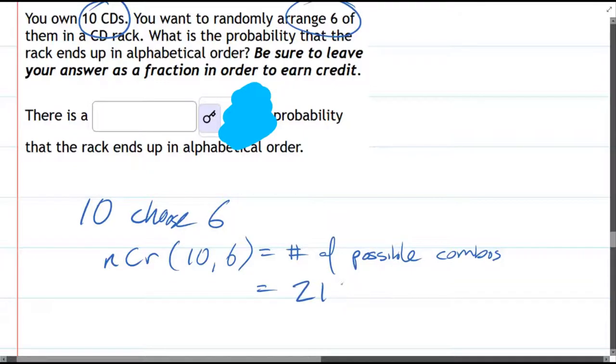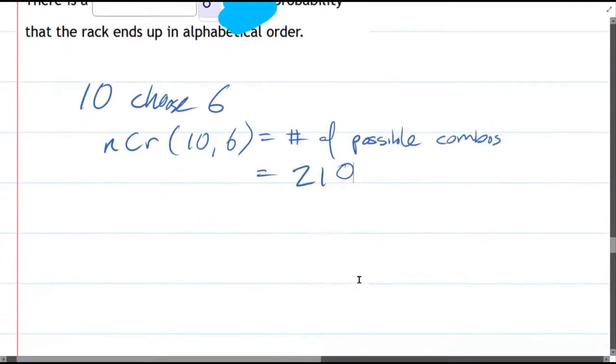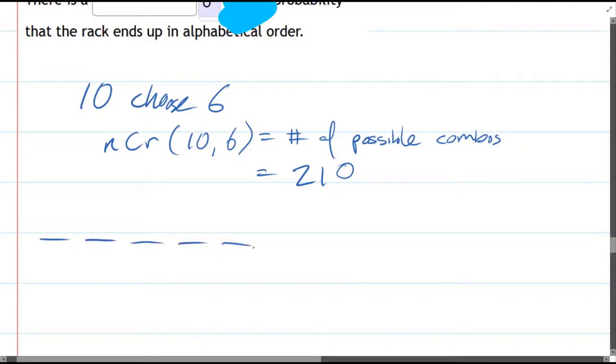So there's 210 possible combinations. Out of these combinations, there's only going to be... How many are going to be in order? Well, if you have 6 things, there's only one way they're in order.